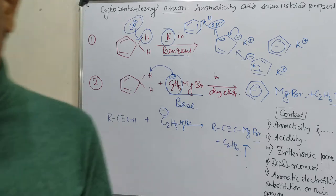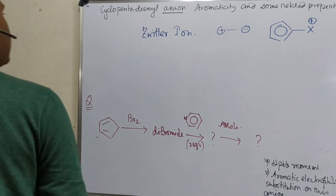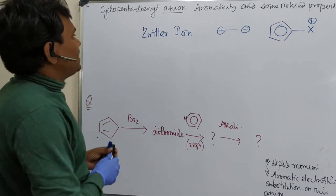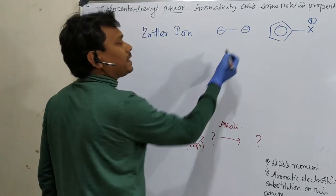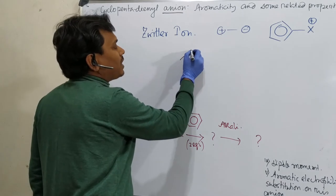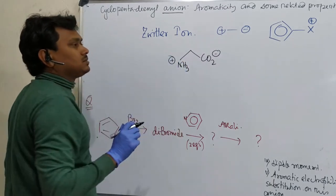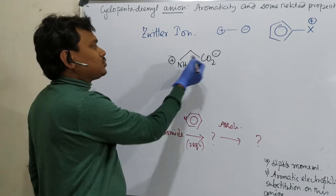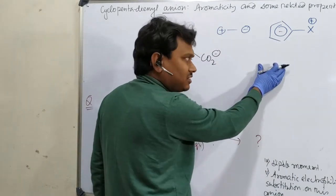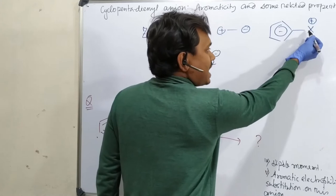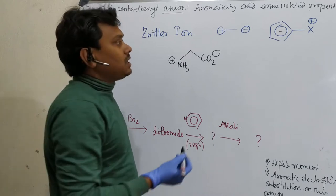Now let's discuss the zwitterionic forms of this molecule. Zwitterionic means a molecule contains both a positive and a negative part. A classic example is an amino acid — glycine has CO2 minus and NH3 plus. Similarly, cyclopentadiene can also form zwitterionic structures where the cyclopentadienyl anion part is the negative portion attached to a molecule bearing a positive charge.